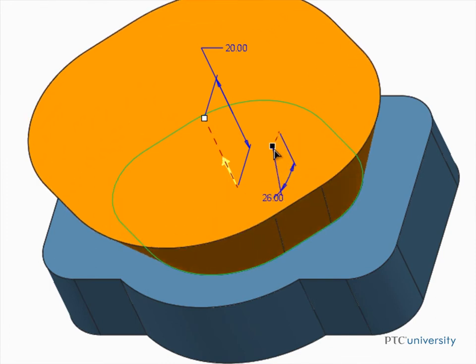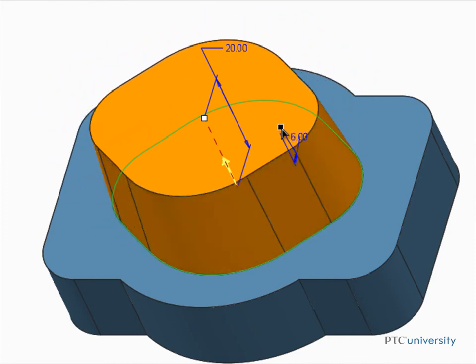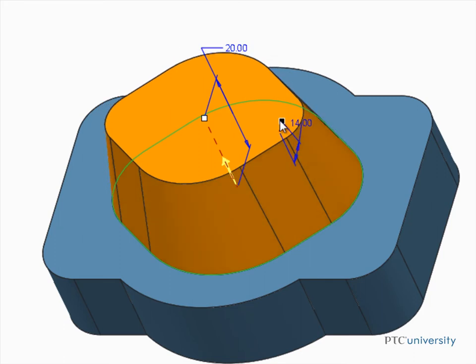You can see the taper being applied to each surface of the extrusion as the dimension handle is dragged back and forth.